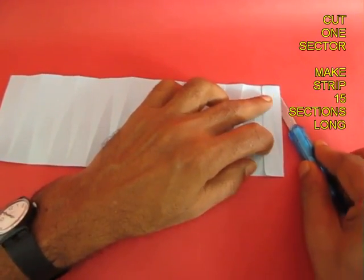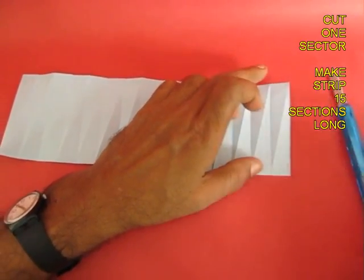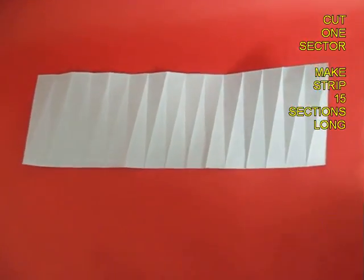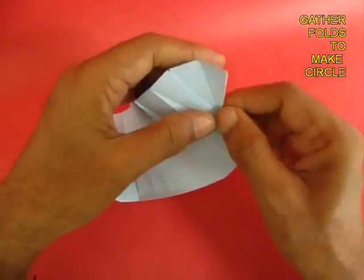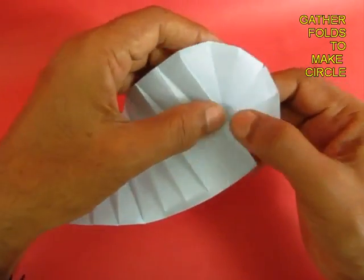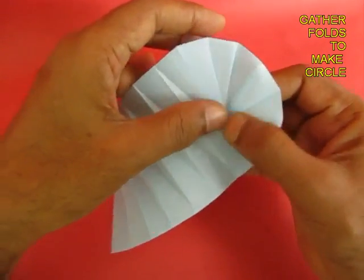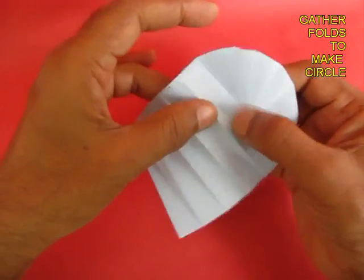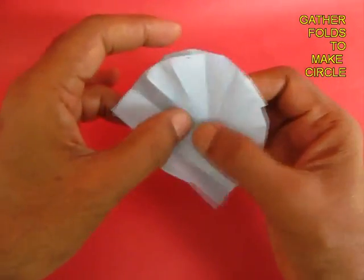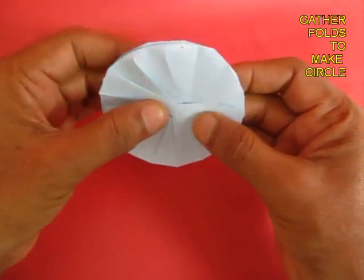Finally cut off one section so that only 15 sections remain. Now if you gather the folds, this strip will form a rosette, almost folding into a circular badge.